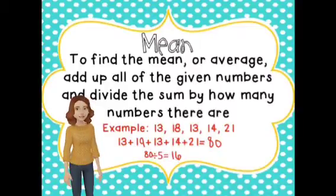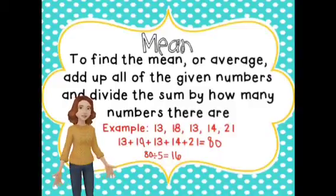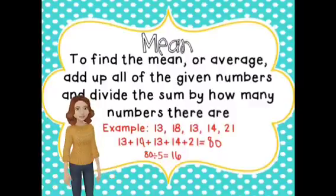After you add up all those numbers, you get 80. Taking 80, you divide it by how many numbers there are, which is 5, and you get 16. 16 is the mean.